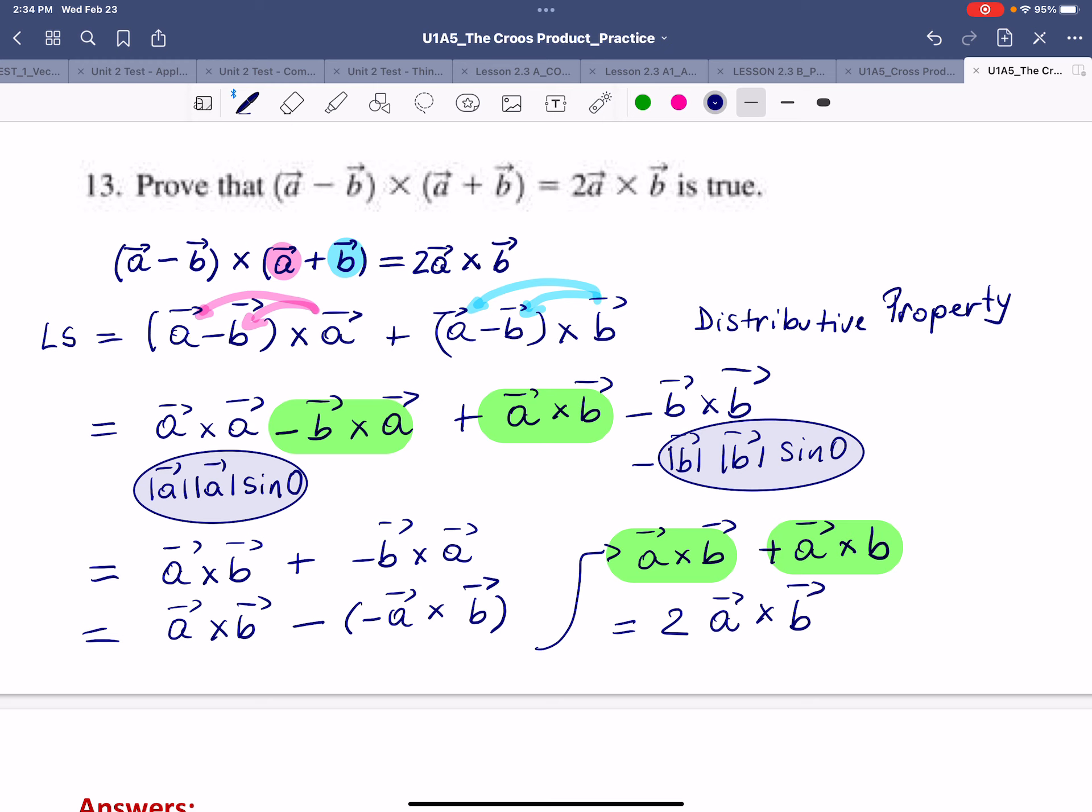Right, so we have, let me highlight this, so 2A cross B. And that's what we have here on the right side. And that's the end of the proof here.